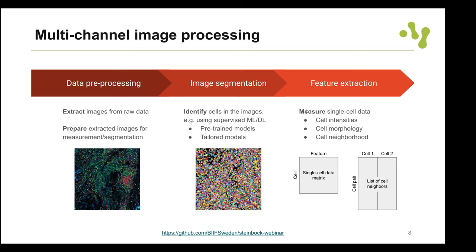The columns contain first the intensities and then the region properties — area, centroid, and so on. This one CSV file can be loaded in R or Python for downstream statistical analysis. Specifically, if you work in Python, I recommend exporting as AnnData instead of CSV, because AnnData can hold pretty much all the information including the cell-to-cell neighborhood information.